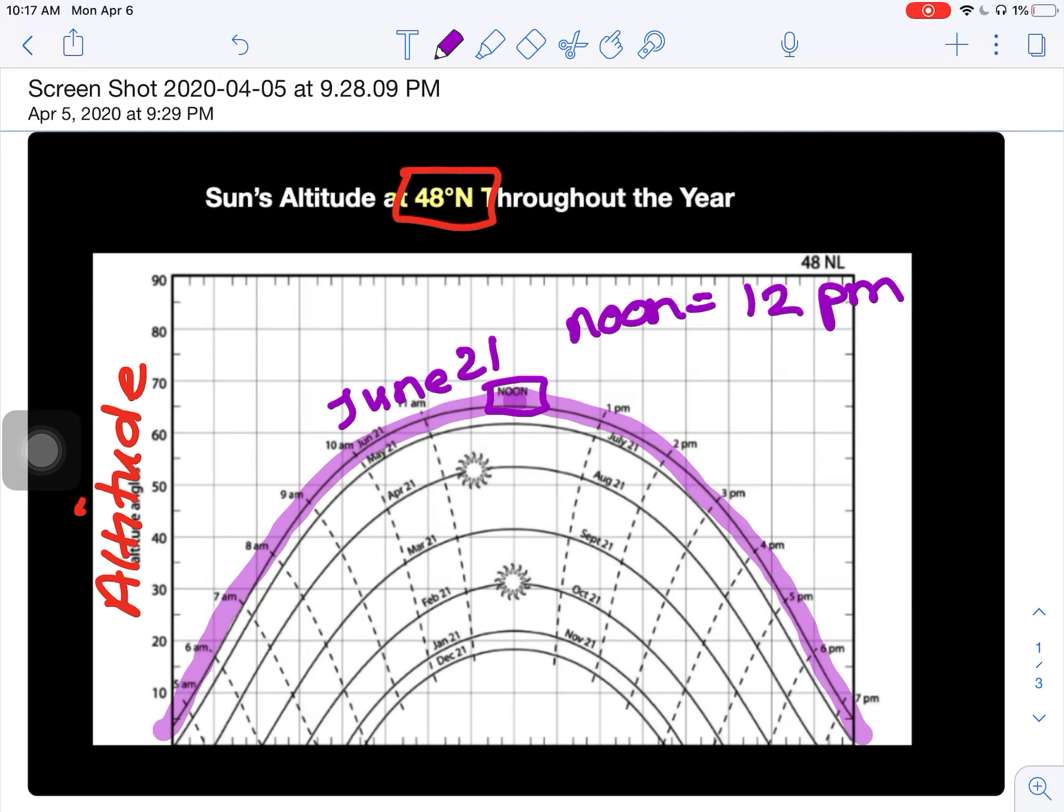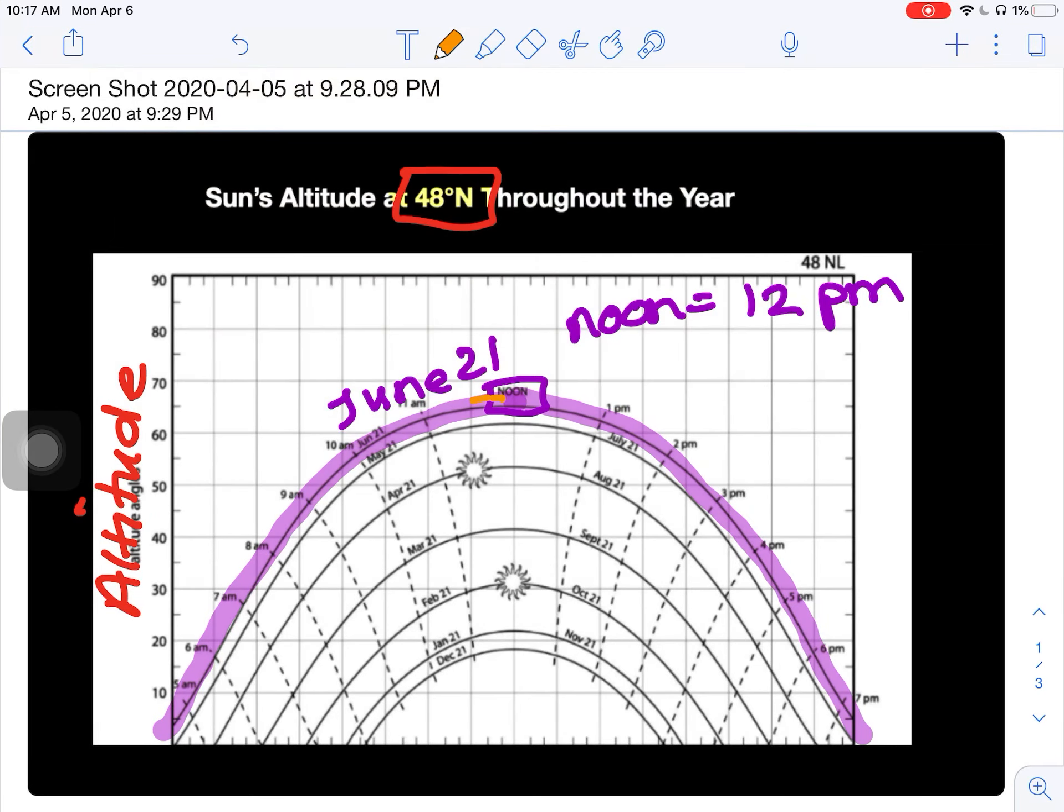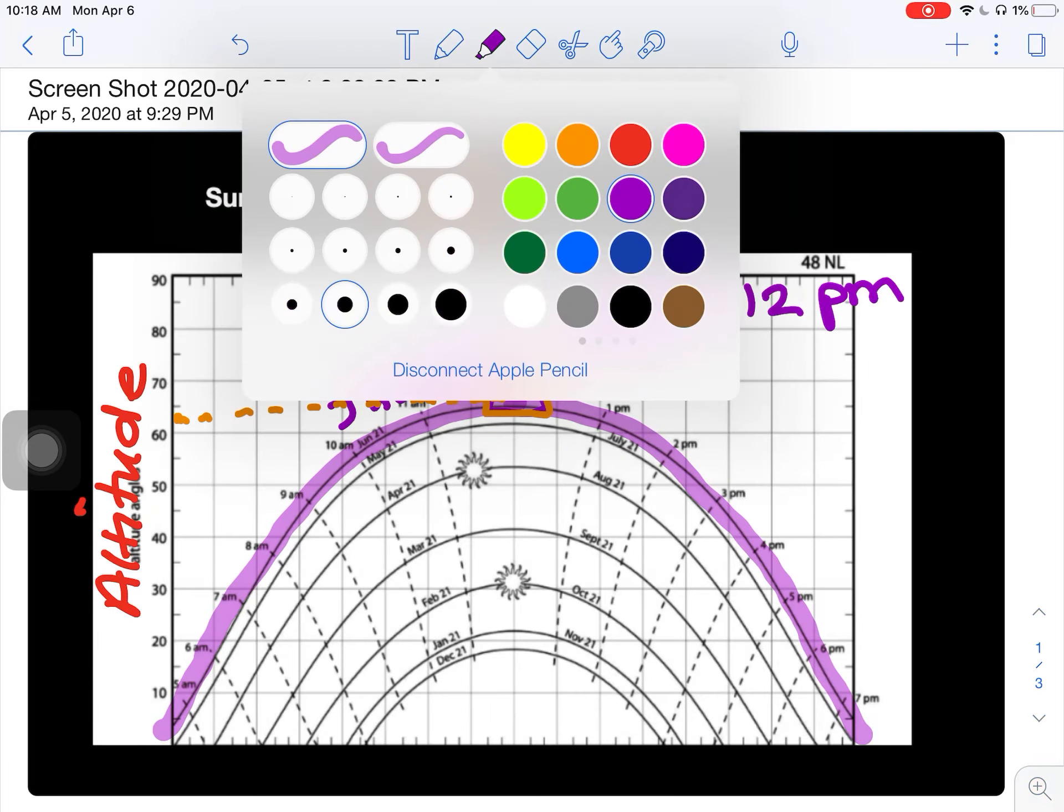That's in the afternoon. And at noon in the afternoon, that's when the sun, no matter what time of the year, is always at its highest altitude. So at noon is when the sun is at its highest, and this changes throughout the year how high it is depending on where you are.